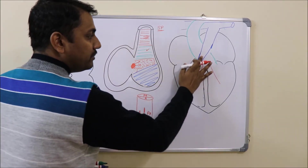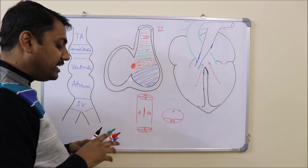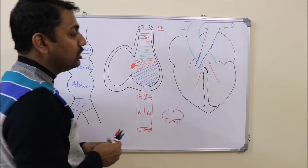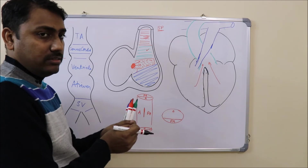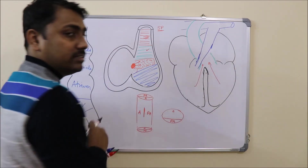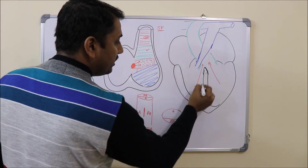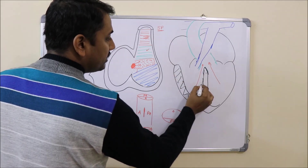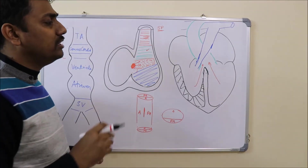This pulmonary stenosis leads to increased resistance at this level. This increased resistance is carried backward to the right ventricle. The right ventricle now has to pump harder so that blood can squeeze out of this narrowed channel, which leads to hypertrophy of the right ventricle — the third feature of Tetralogy of Fallot.